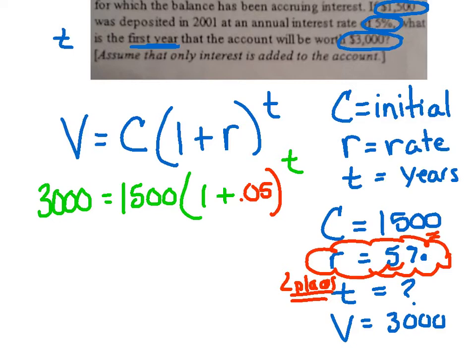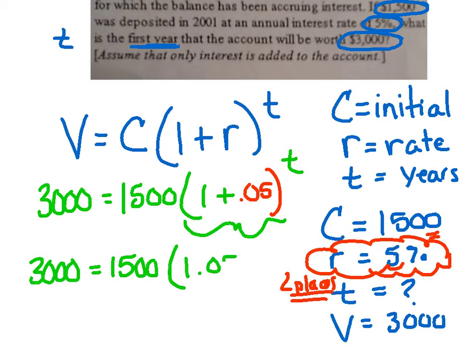Now, order of operations says start inside the parentheses. Always do the math in here first. And I think you can probably do that in your head. If not, grab a calculator. But 1 plus .05 is 1.05 raised to the t. So again, I would probably make a little side note here, you know, add in parentheses first.